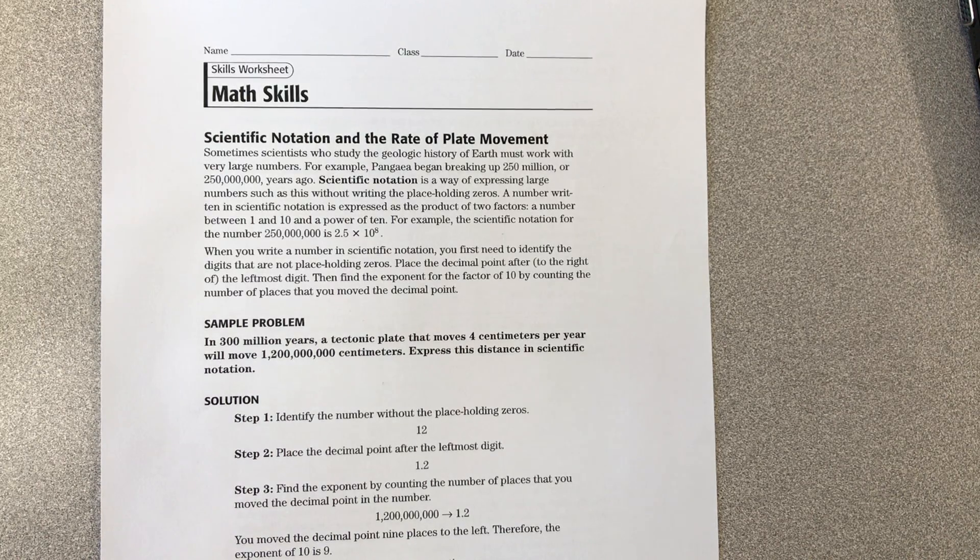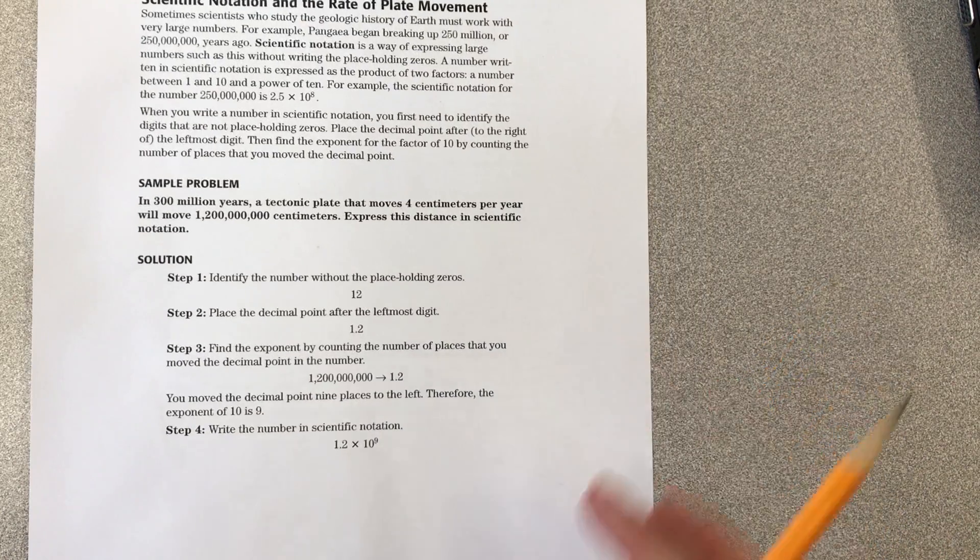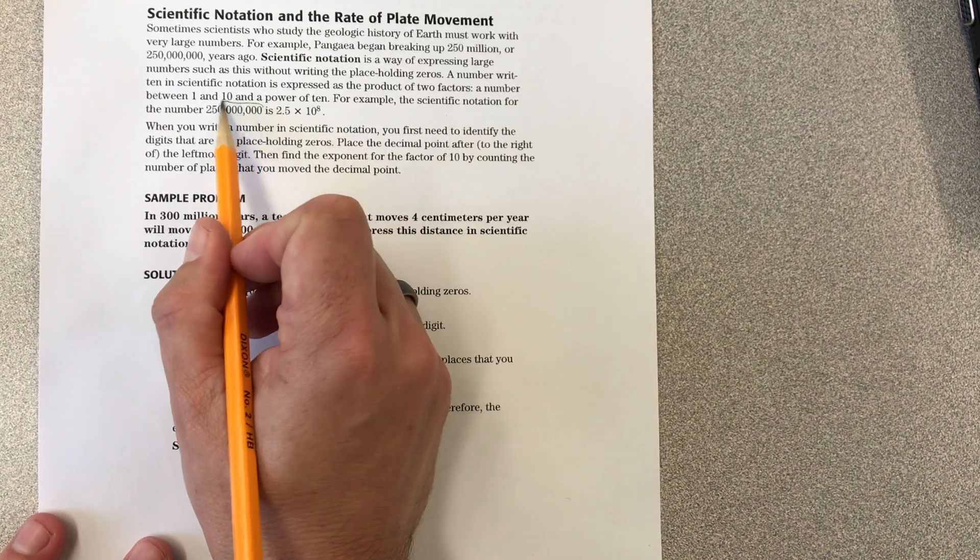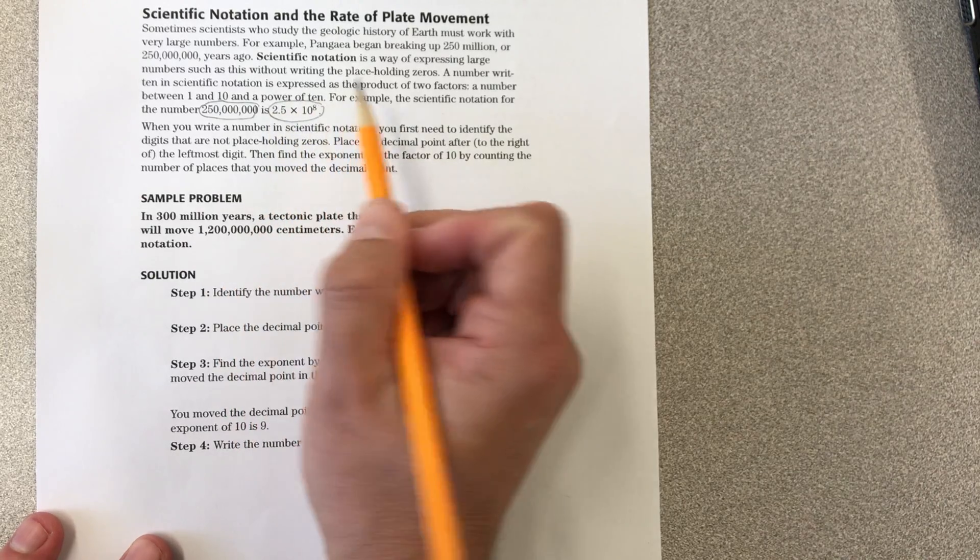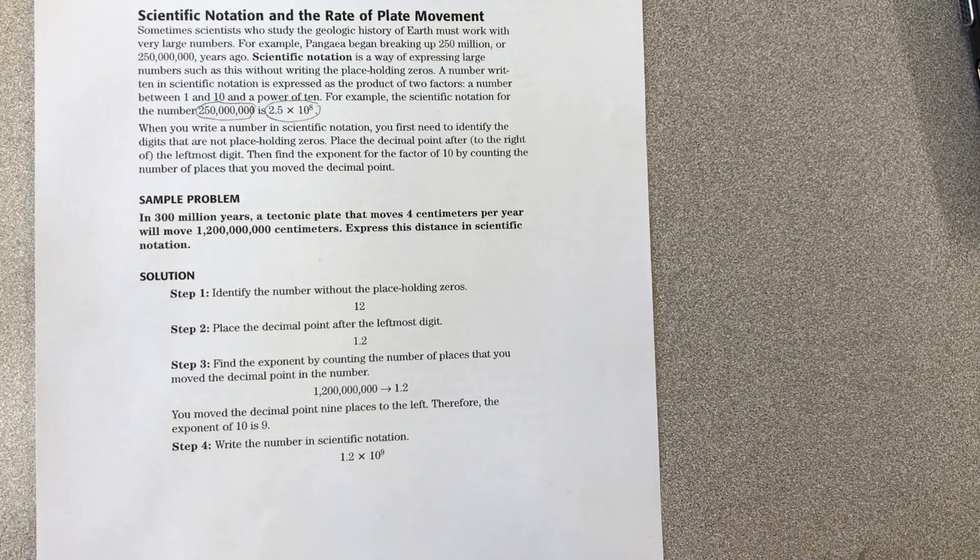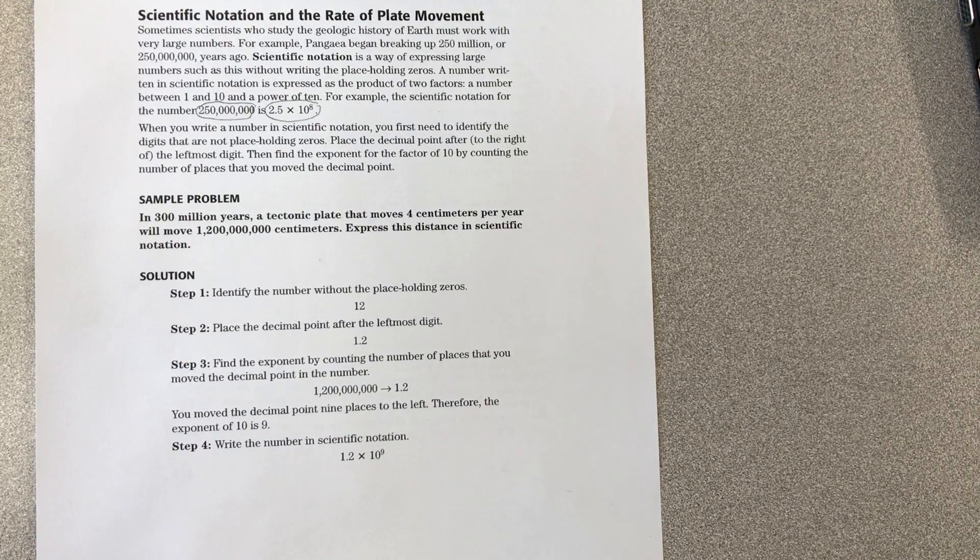With the discussion of plate tectonics, we're doing a worksheet on scientific notation. Scientific notation is used to express very large numbers like 250 million into a smaller format like 2.5 times 10 to the 8th. You've seen this before, so this should be review, but you'll have a couple practice problems on the back of this worksheet.